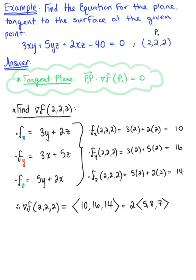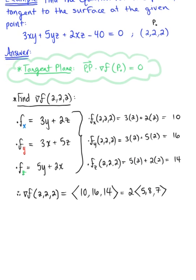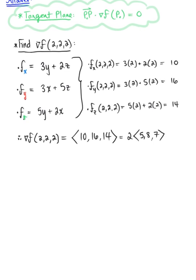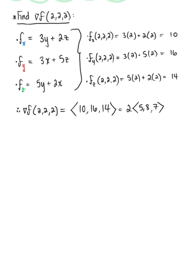Since scalar multiples are parallel vectors, instead of using the full gradient, we can let the normal vector be the smaller portion because it's still parallel to the gradient vector. We'll define our normal vector as ⟨5,8,7⟩.